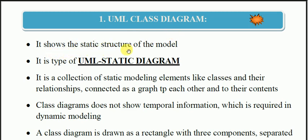It shows the static structure of the model. I have told you that UML deals with two types of diagrams: one is the structural diagram and the second one is the behavioral and functional diagram. So the class diagram is in the structural diagram category, and it is the static representation of the system. The class diagram is a static diagram.